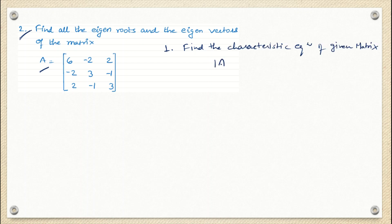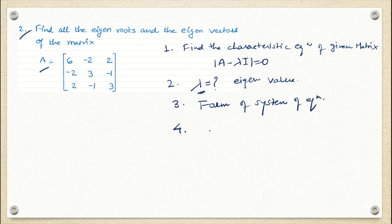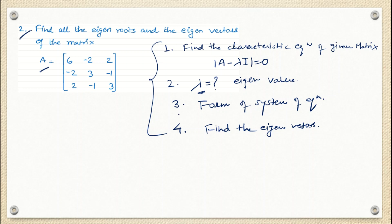That characteristic equation is A minus lambda I equals zero. The second step is to find the value of lambda, and this lambda is the eigenvalue. The third step is to form the system of equations, and the final step is to find the eigenvector. These four steps were elaborated in last class, so in today's class we are just going to see the process.